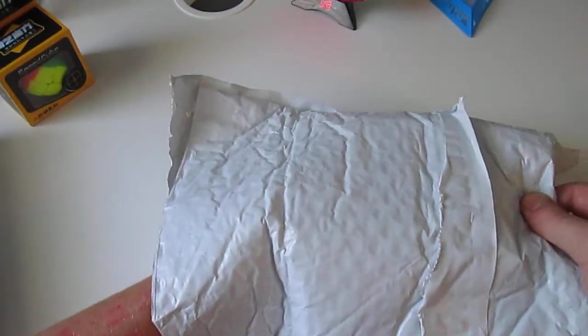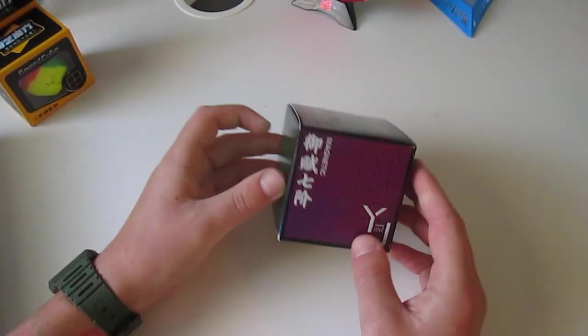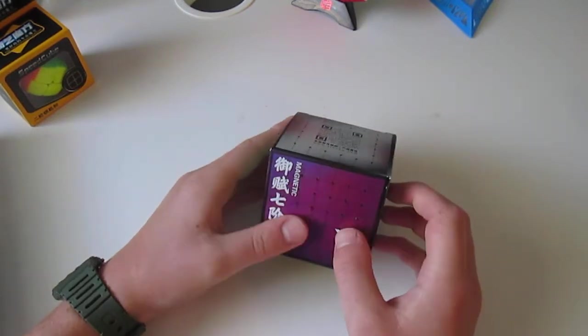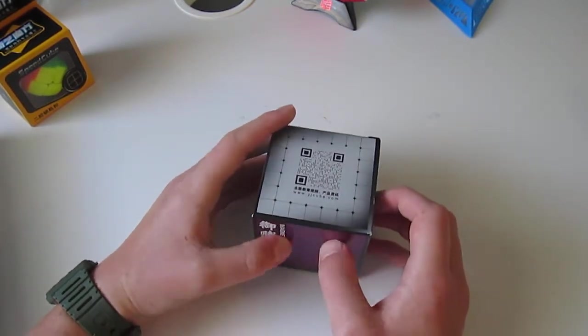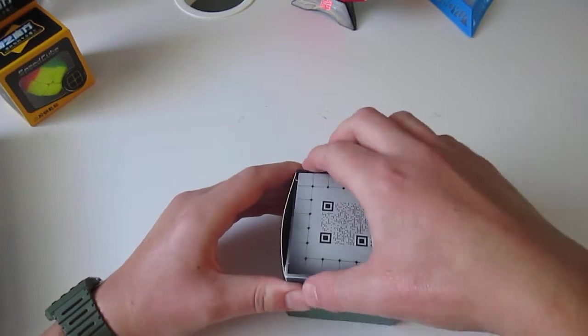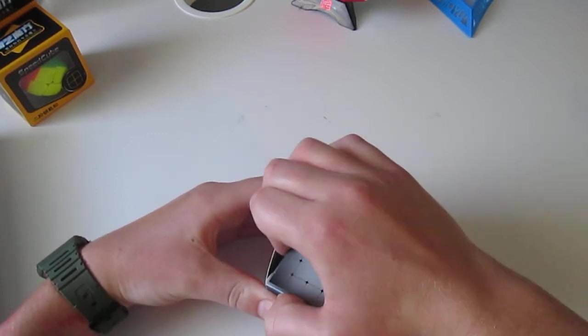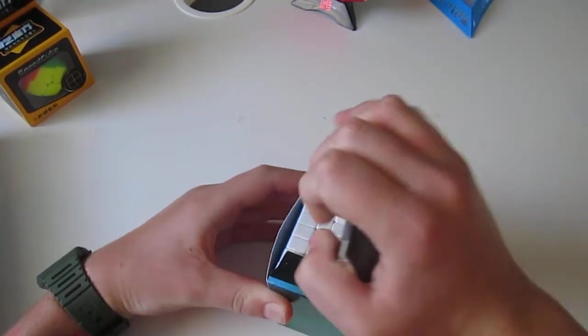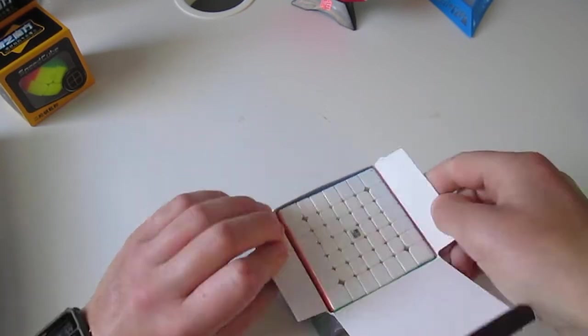But then the thing I'm most excited about is this. This is the YJ Yufu V2M 7x7. Now, this is a really exciting cube. And yeah, I don't actually have a very good 7x7. Mine is actually non-magnetic, so here it is. Wow.